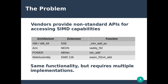The problem SIMD Everywhere is trying to solve is that CPU vendors all use different, incompatible APIs to expose SIMD functionality on their CPUs. SIMD Everywhere basically uses one API, for example Neon, to implement another API, such as SSE.